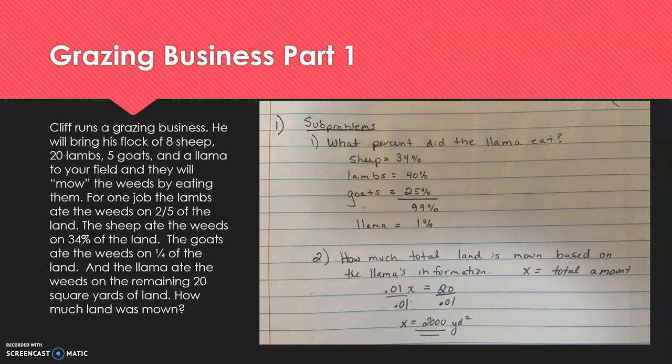Grazing business part one, and this is number one on page 194. It says, Cliff runs a grazing business. He will bring his flock of eight sheep, 20 lambs, five goats, and a llama to your field, and they will mow the weeds by eating them. For one job, the lambs ate the weeds on two-fifths of the land. The sheep ate the weeds on 34% of the land. The goats ate the weeds on one-fourth of the land. And the llama ate the weeds on the remaining 20 square yards of land. How much land was mown?